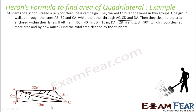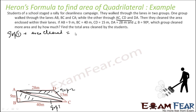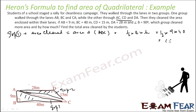Which group cleaned the larger area? For group 1, the area cleaned is the area of triangle ABC. Since it is a right triangle at B, area = 1/2 × base × height = 1/2 × 9 × 40 = 180 meter square. So group 1 cleaned 180 meter square.